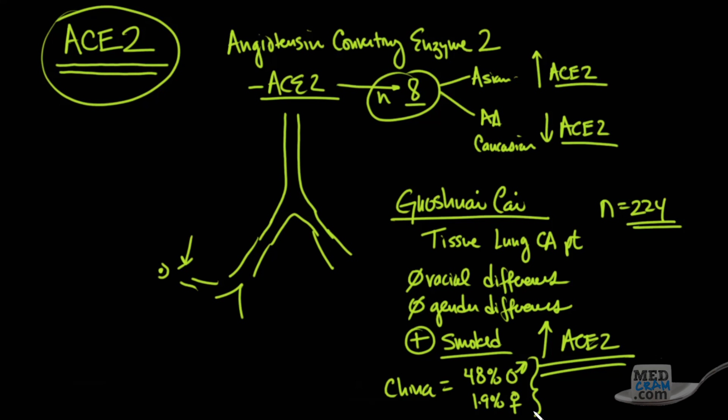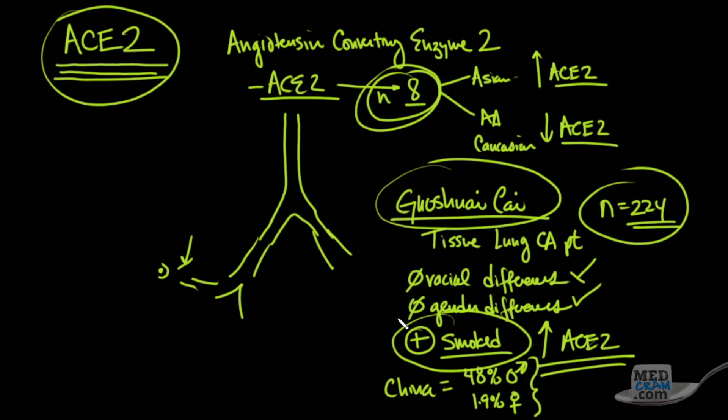But we've got two different studies. We've got one study that shows N of eight, which seems to be making the rounds on the internet, that Asians have a higher expression of ACE2, therefore more targets, therefore more possible infections by the virus. Whereas in another study, 224 different samples, there was no racial differences, no gender differences, but they did notice an increase in ACE2 protein when patients smoked or had a history of smoking in the tissue.